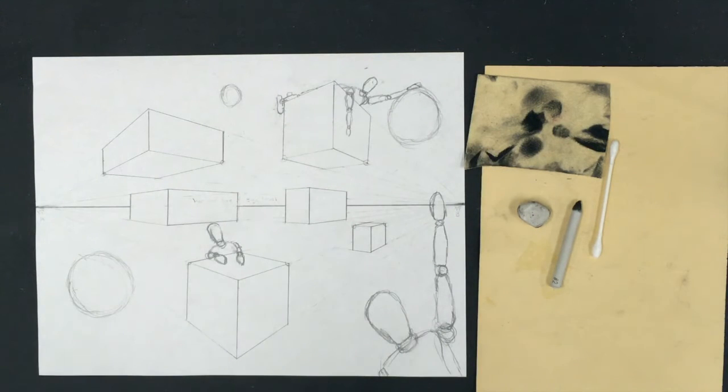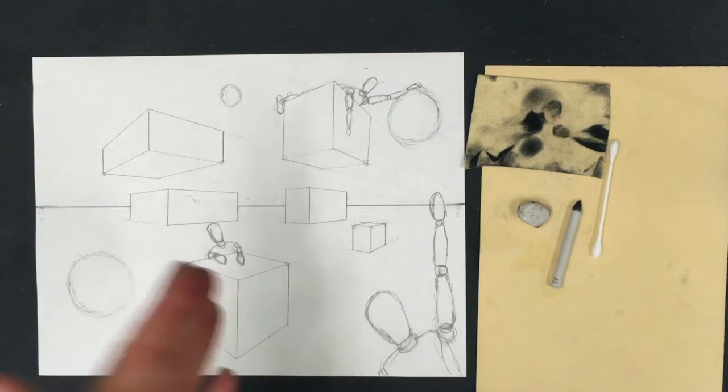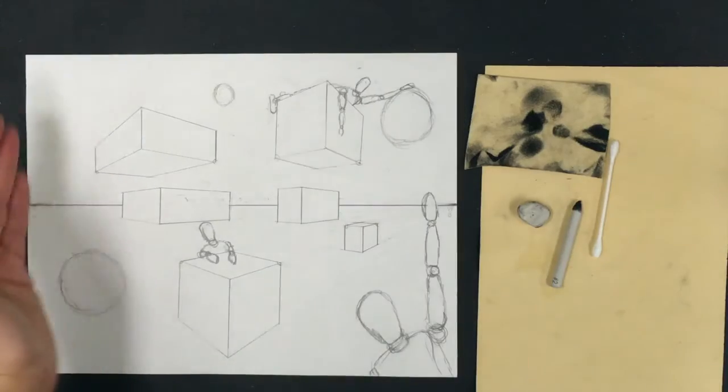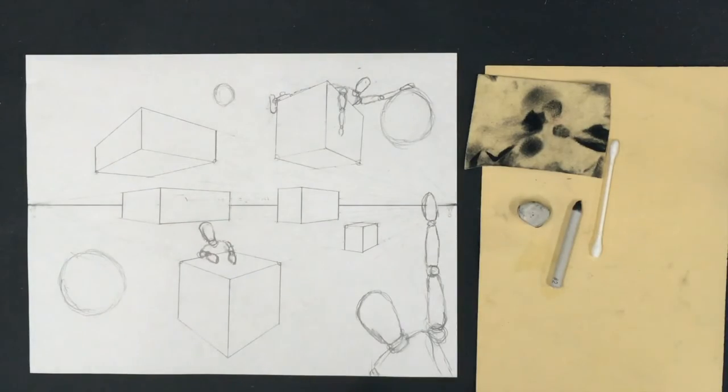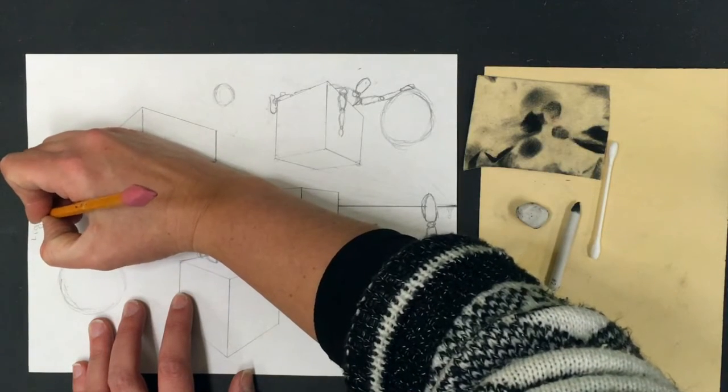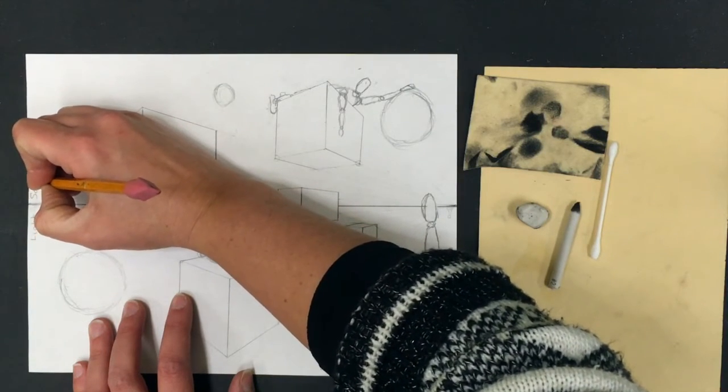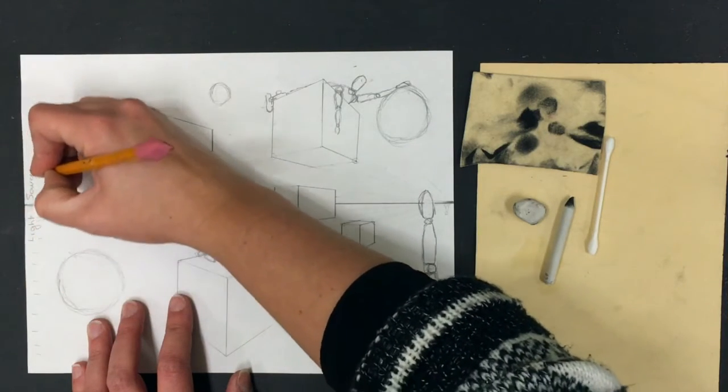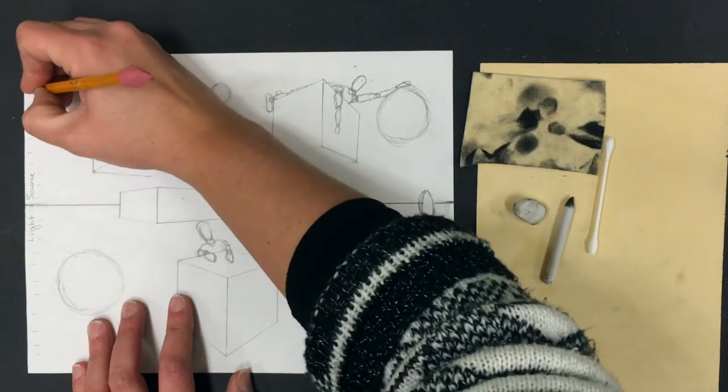That's part of the spatial intelligence or spatial acuity we've been talking about - understanding how light might act with these three-dimensional objects. On either the left or right side of your paper, write 'light source' and give yourself little light bars. Imagine that light is flooding in evenly across the whole side of this page.